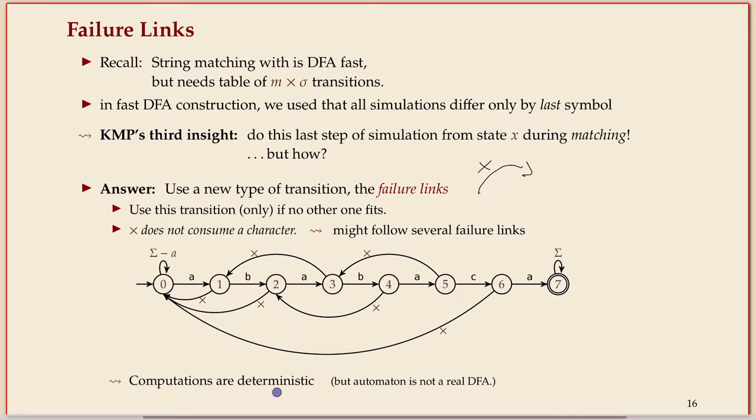So in a way, the computations are like in a DFA. You always know exactly what to do because either there is an edge for your character, then you have to take it, or there is no such edge, then you have to take the failure link. No random guessing, no Schrodingers whatever. You're not in several states. But at the same time, it's also not quite like a DFA. It's a little different.